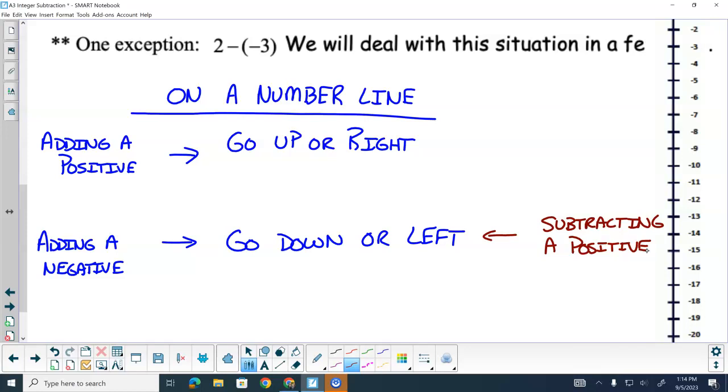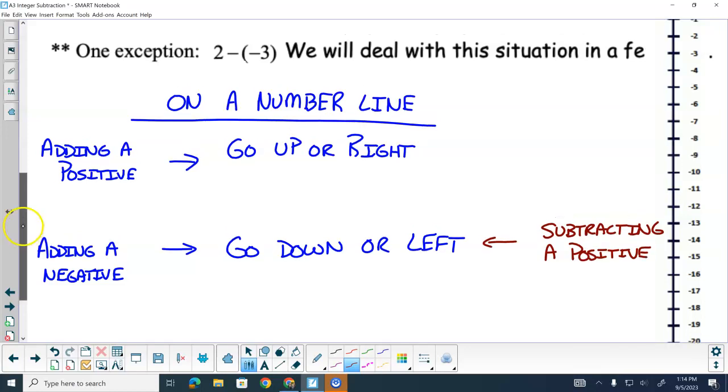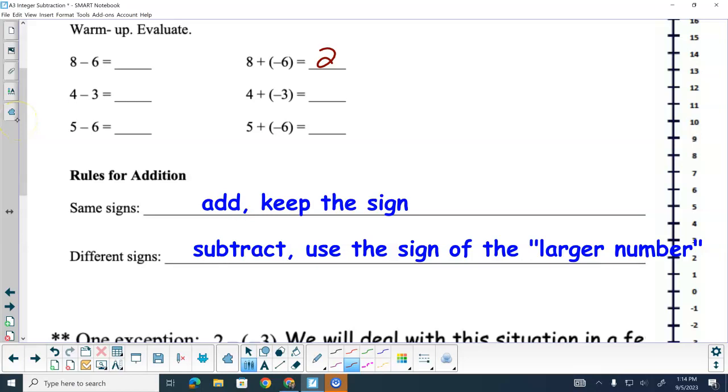Now, our signs are opposite. So, we subtract them. 8 minus 6 is 2. 8's the bigger one. It's positive. So, this would be 2. On a number line, when you're subtracting a positive number, you are actually going to do the opposite because addition is opposite. So, adding a negative number is the same as subtracting a positive number. So, we would go down or left on the number line. 8 minus 6, we would start at 8. Because we're subtracting a positive number, I'm going to go down 6. One, two, three, four, five, and six. And that puts me at 2. 4 minus 3 is the same as 4 plus negative 3. Start at 4. Down 3. One, two, and three. Ends at 1.